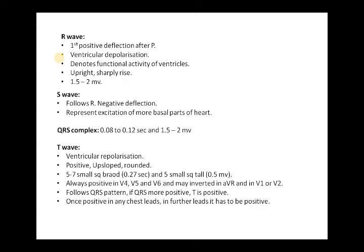The T wave is another important wave, like the Q wave, for defining ischemia and infarction, or for observing ventricular strain. It occurs because of ventricular repolarization. It is always positive and up-sloped — 5 to 7 small squares broad (0.27 seconds) and 5 small squares tall (0.5 millivolts). It is always positive in V4, V5, and V6, but may be inverted in V1, V2, and AVR normally. The T wave follows the QRS pattern: wherever the QRS is more positive, the T wave has to be positive.